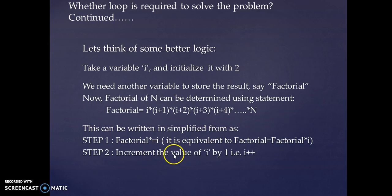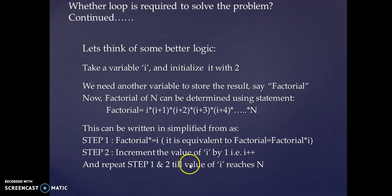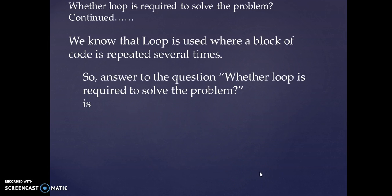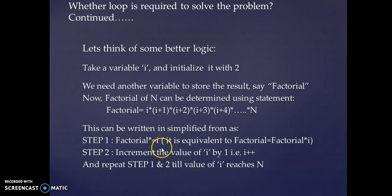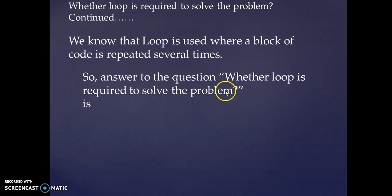Next, increase the value of i — i starts at 2, then becomes 3. Then repeat: multiply i into factorial, store the result, and increment i again. This process continues until the value of i reaches n. Since we are repeating a block of code several times, the answer to whether a loop is required is yes.